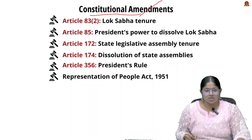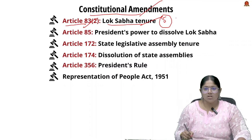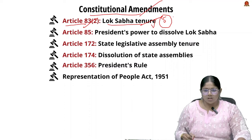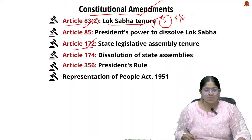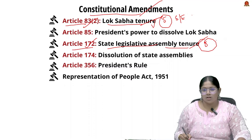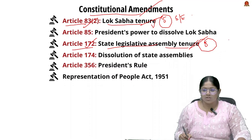Article 83(2) talks about the Lok Sabha's tenure of five years unless dissolved earlier. For simultaneous elections, this tenure needs to be either shortened or extended depending on election cycle alignment with state assemblies. Similarly, Article 172 talks about the state legislative assembly's tenure of five years unless dissolved earlier, and here again the tenure needs to be adjusted to align with Lok Sabha elections.